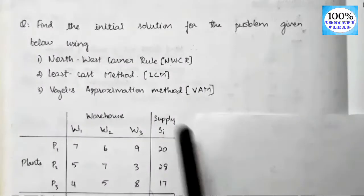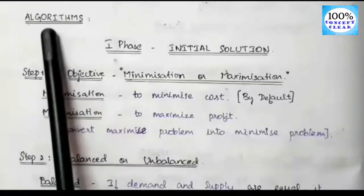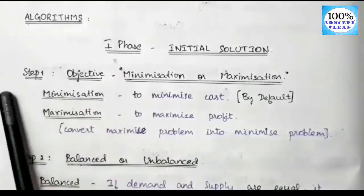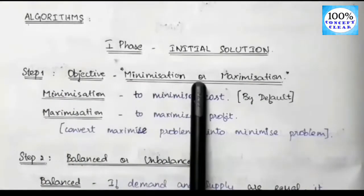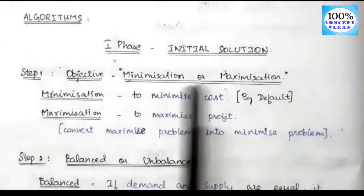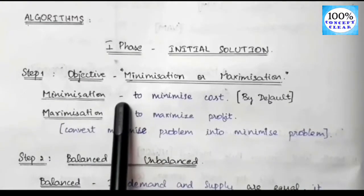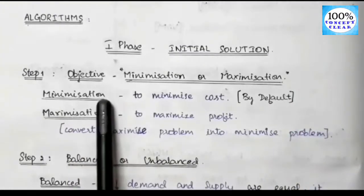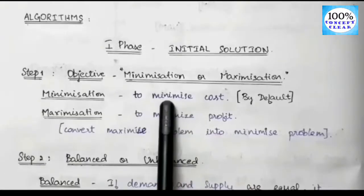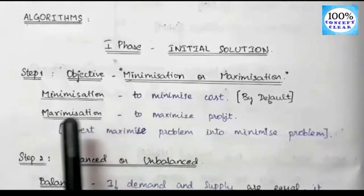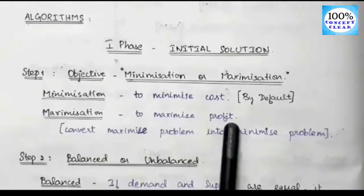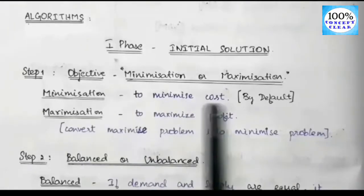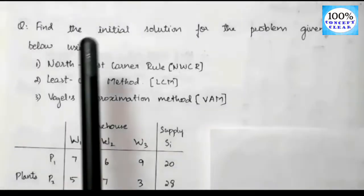So how do you solve the algorithm step by step? The algorithm has a first phase: initial solution. Step 1 is to identify the objective — minimization or maximization. Minimization means minimizing cost, and maximization means maximizing profit. When we have a transportation problem, by default it is a minimization problem.